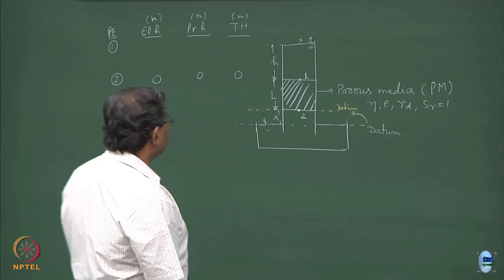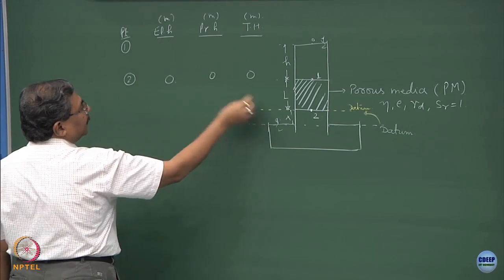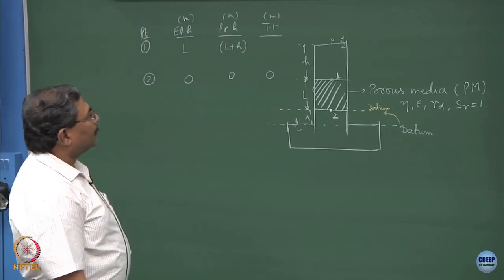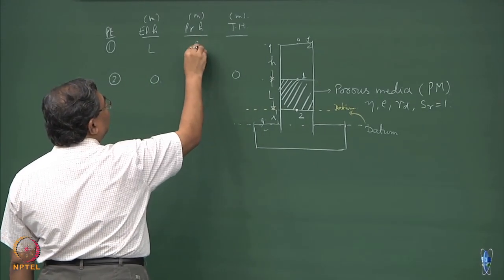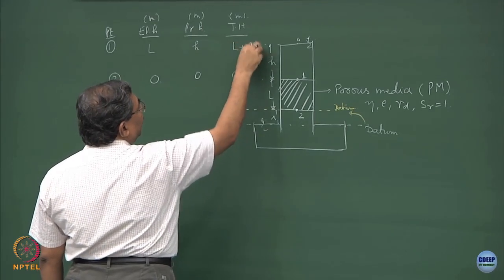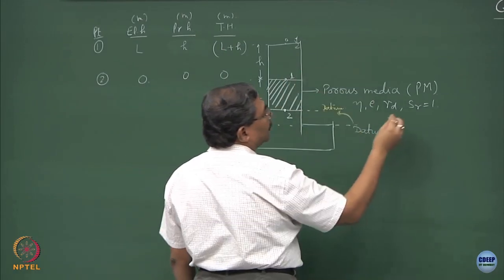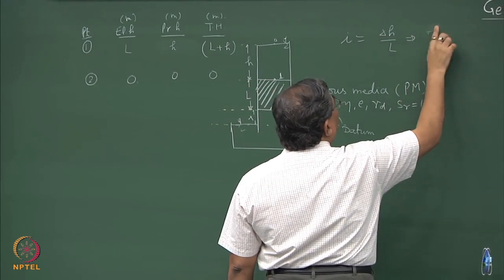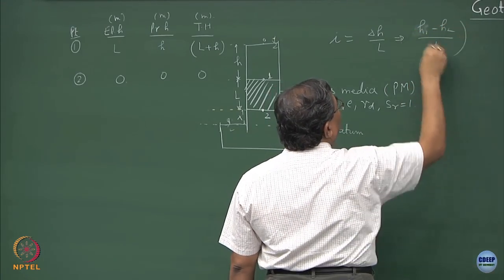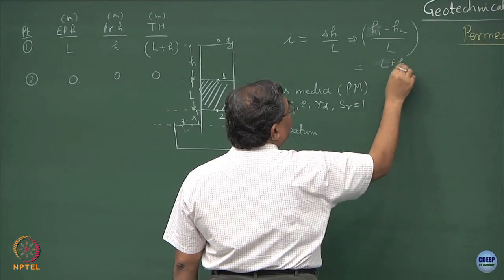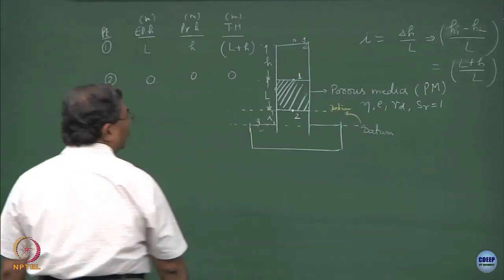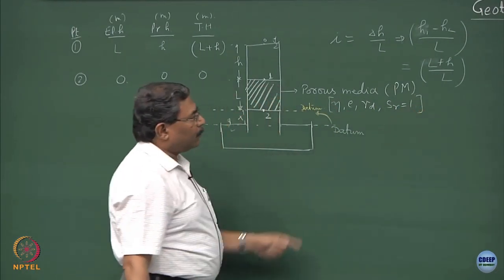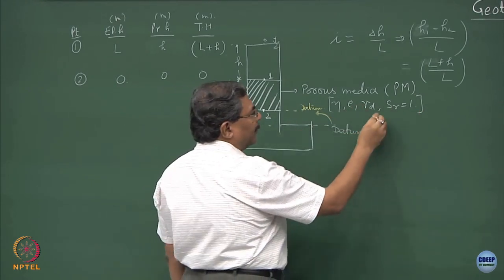At point 1, the elevation head is L and the pressure head is H, so the total head is L plus H. The hydraulic gradient is delta H upon L, which equals H1 minus H2 over L — that is L plus H over L. The porous media is described by parameters: porosity, void ratio, dry unit weight gamma d, degree of saturation Sr, specific gravity, and so on.